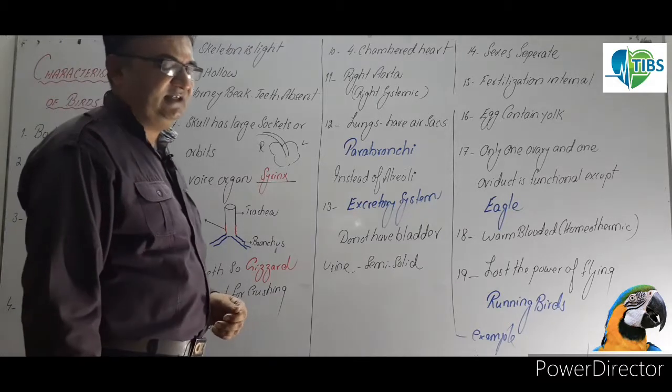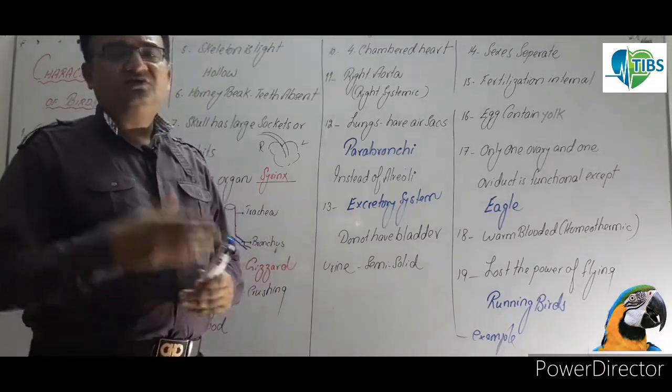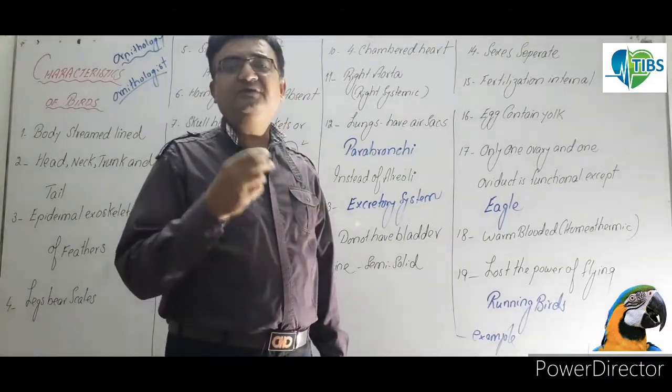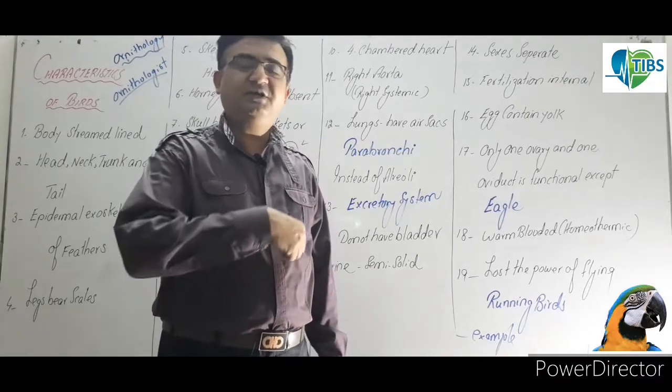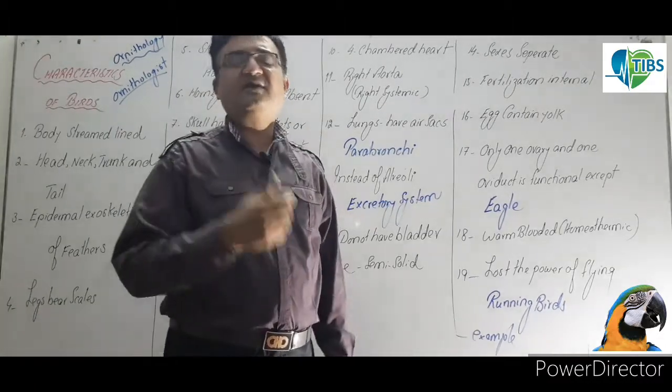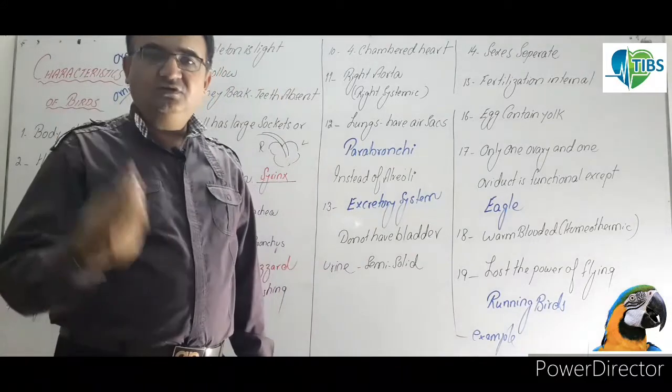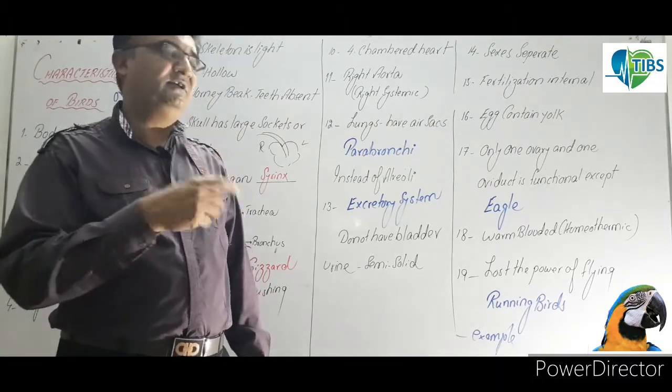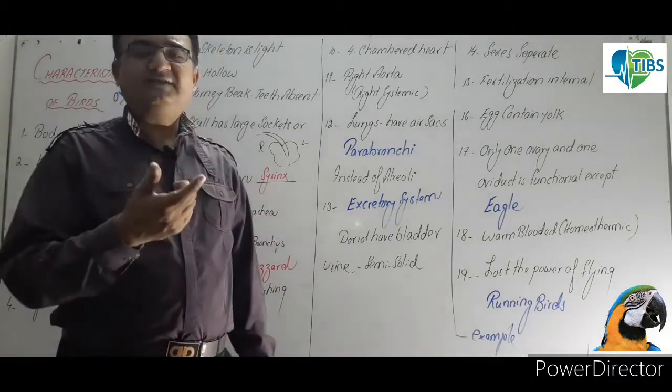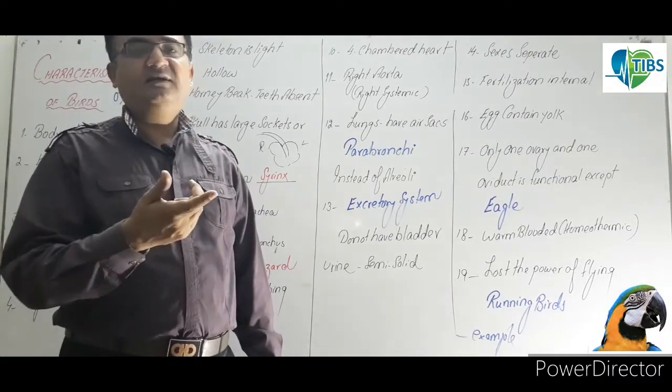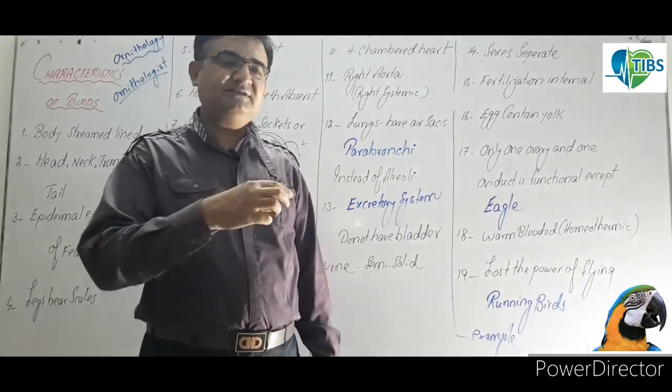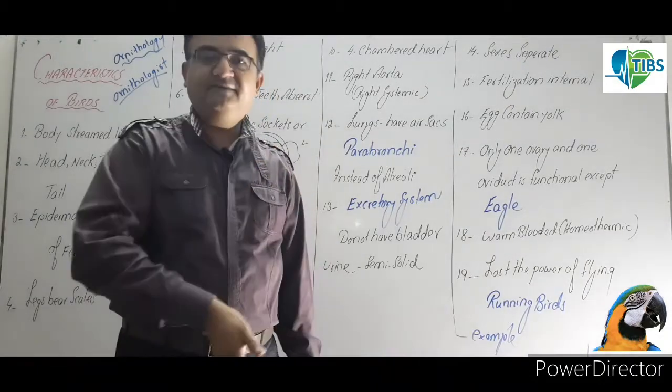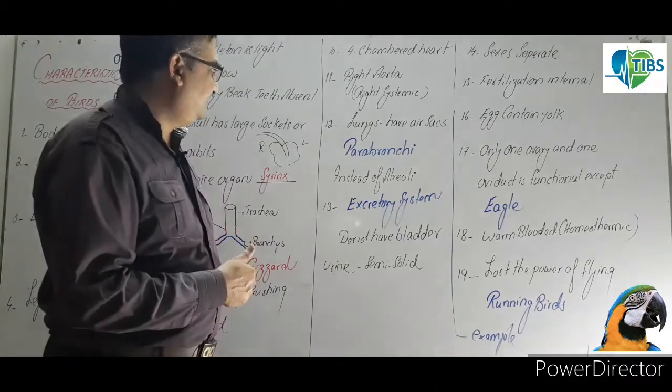If you ever forget, remember it this way: birds are very innocent and truthful, they never lie. Therefore their aorta or systemic arch always turns to the right side. Humans, most people sometimes lie and commit fraud, but birds never lie. That's why mammals' arch or aorta turns to the left side. Remember it this way.